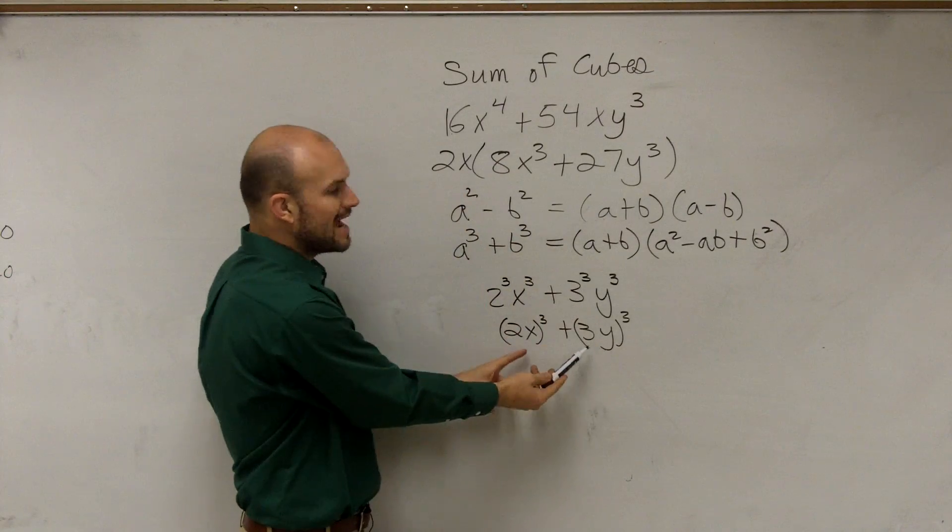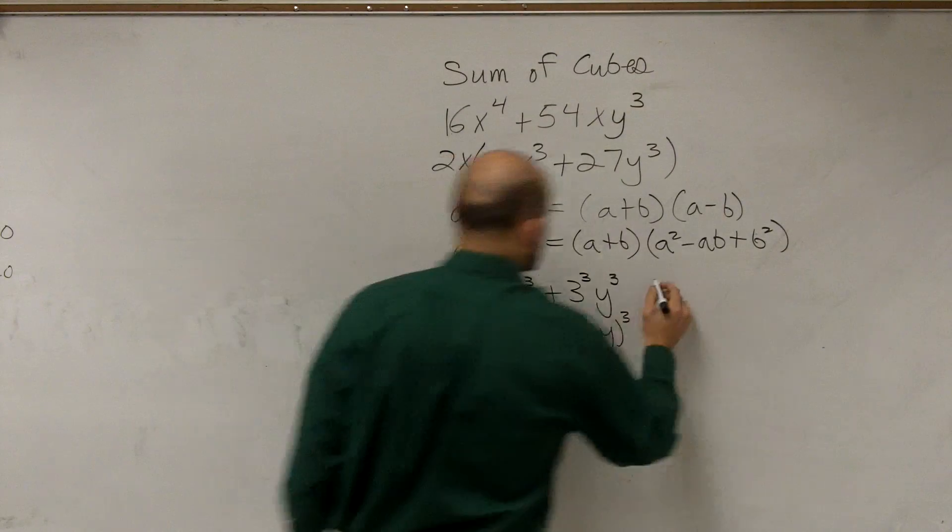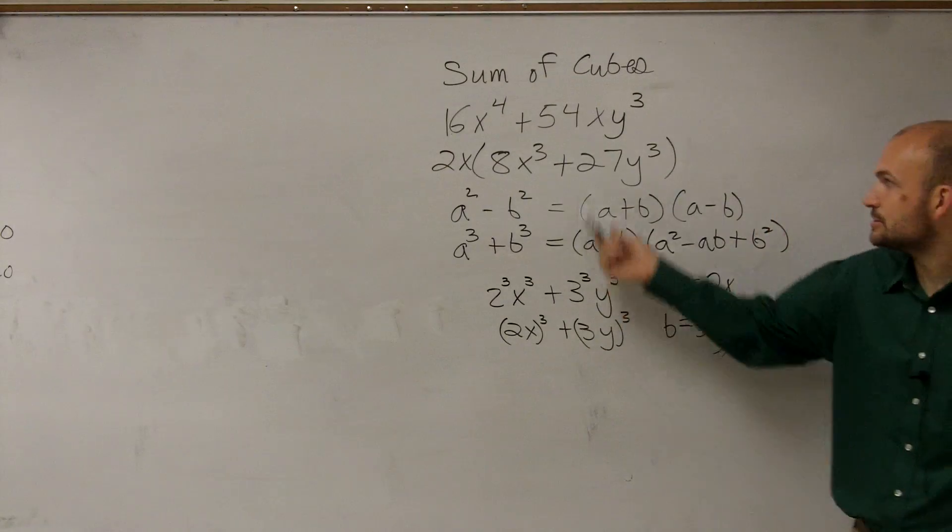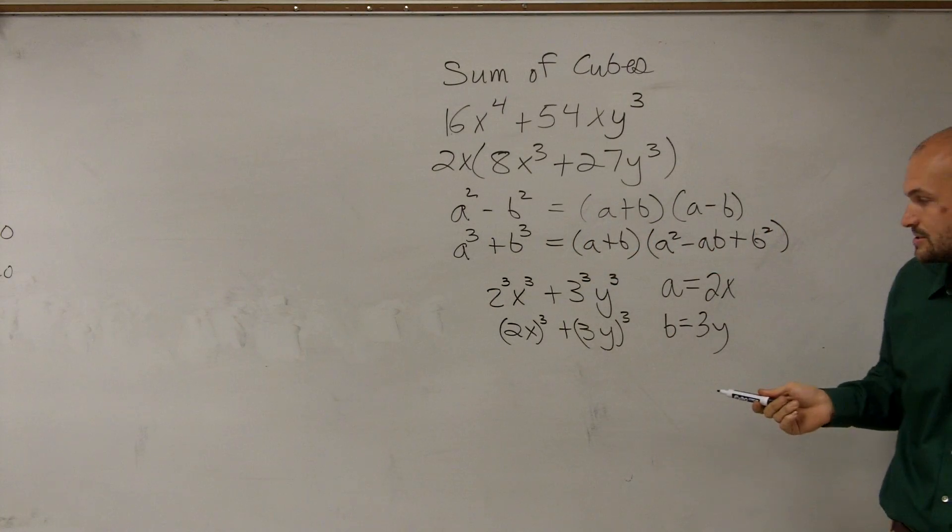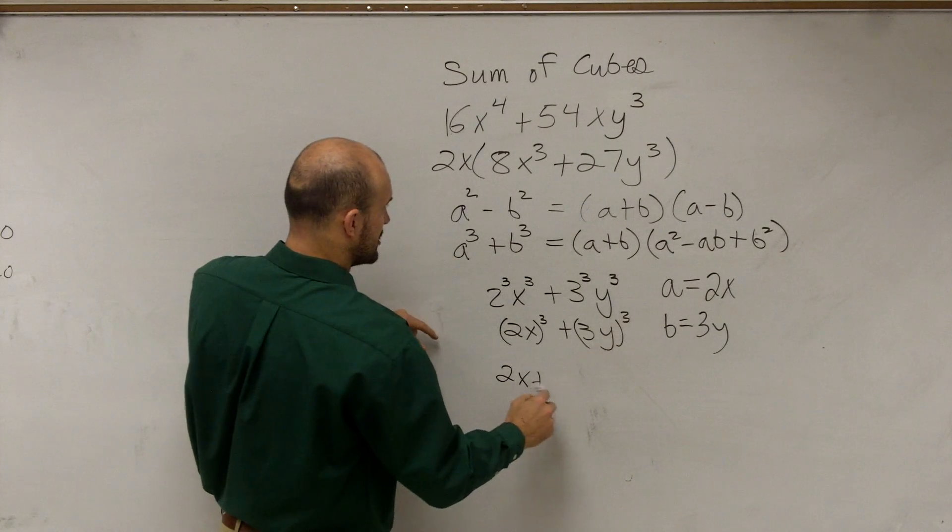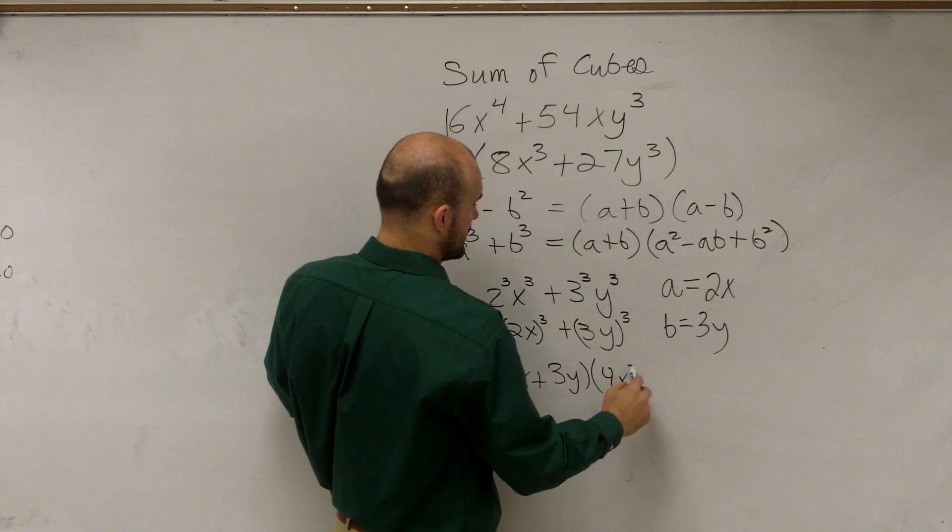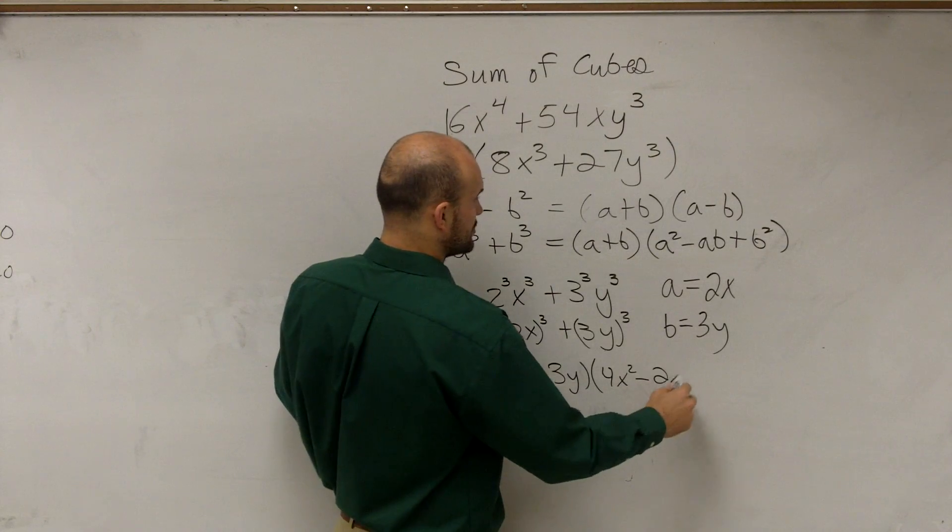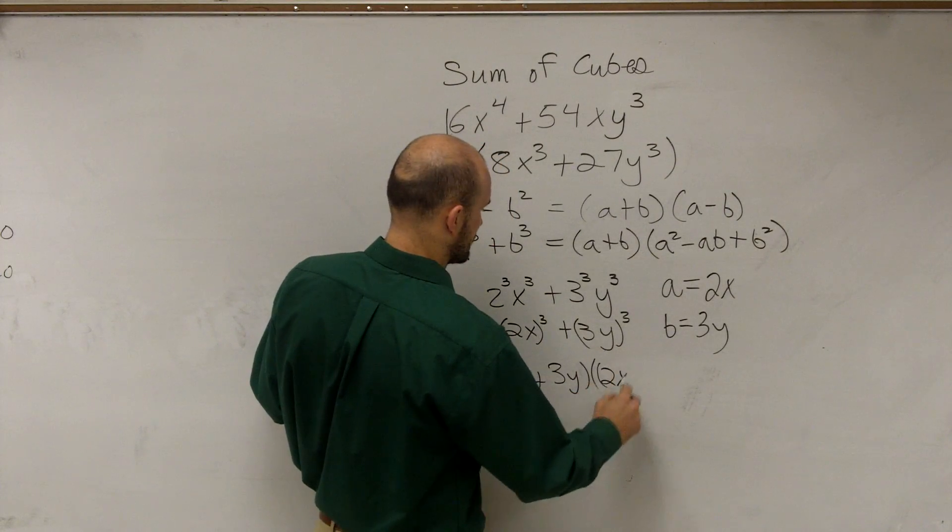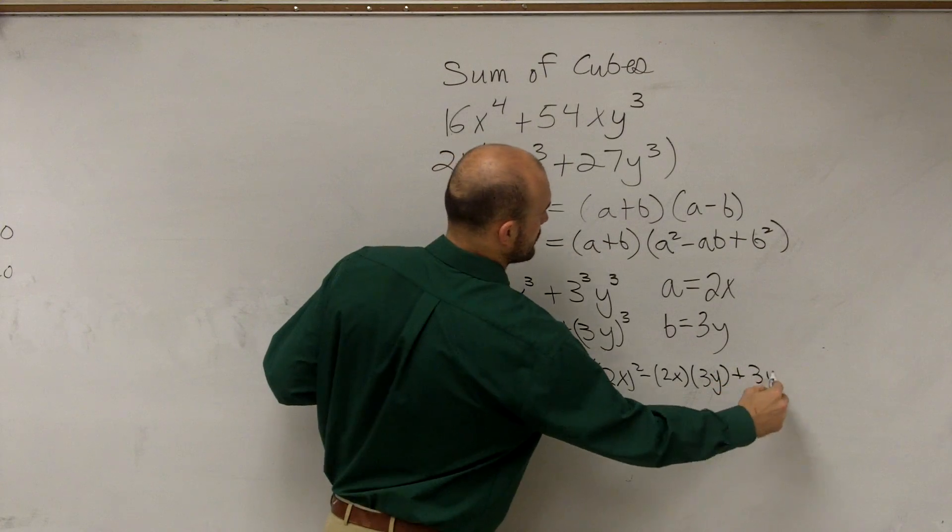So now, we wrote this, we're rewriting this as the sum of a cube number and another cube number. So what we can say is, by using the formula, a is going to equal 2x and b is going to equal 3y. So once you can determine if you can write it as a sum of two cubed numbers, now what we can do is just go and plug them into our formula. So our formula again says a, which we said was 2x, plus b, which is 3y, times a squared, which is going to be 4x squared, minus 2x times 3y, plus 3y squared.